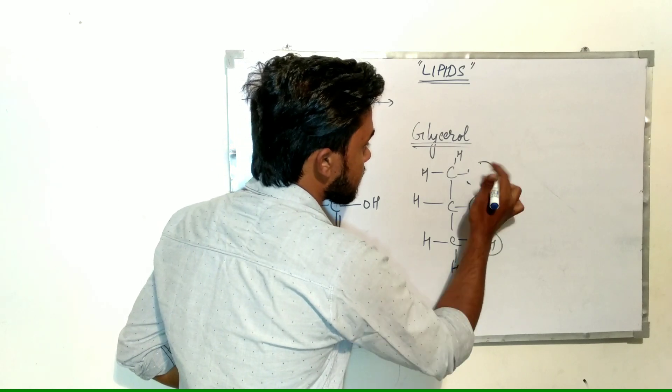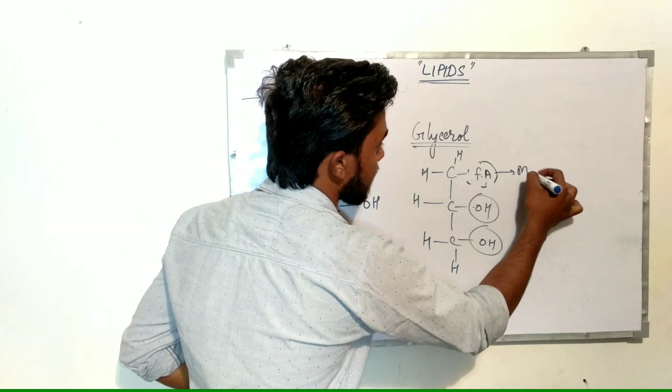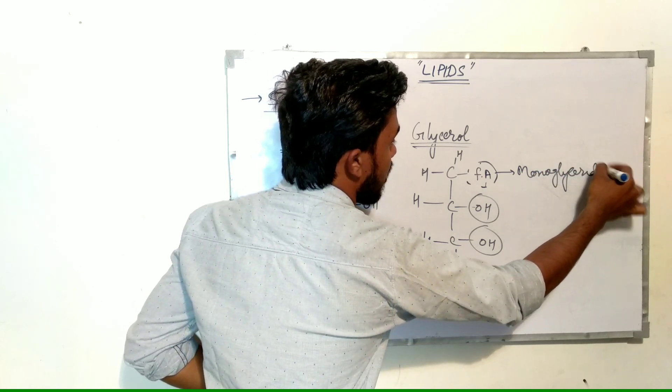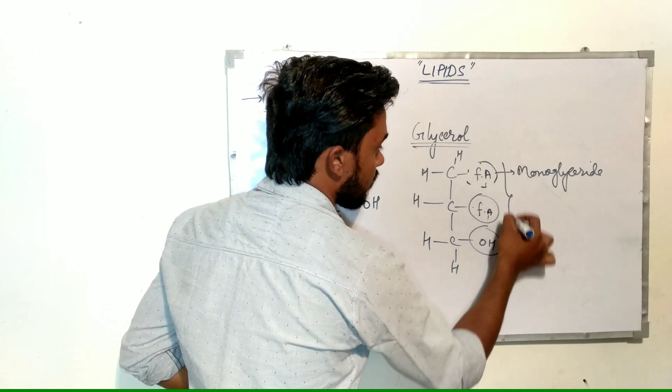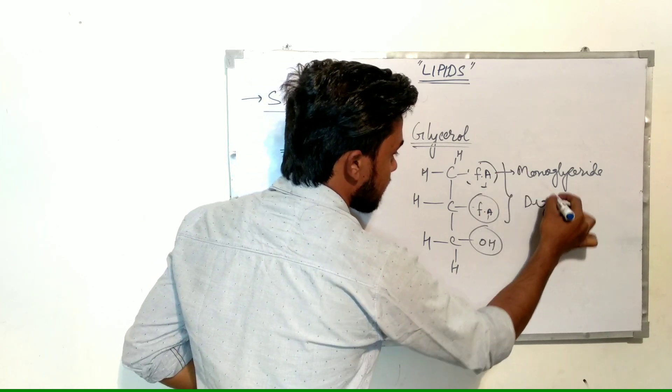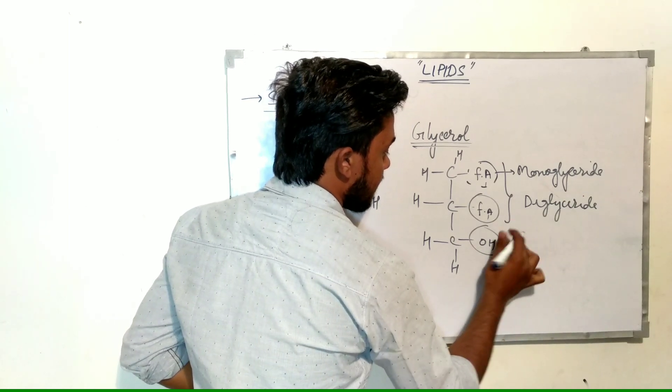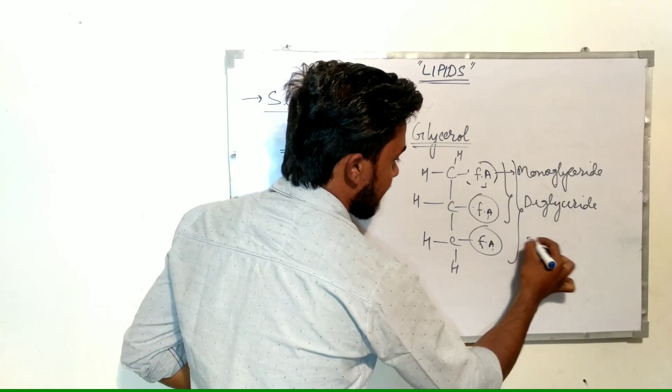If only one fatty acid is present, it is called monoglyceride. If two fatty acids are present, it is called diglyceride. If three fatty acids are present, it is called triglyceride.